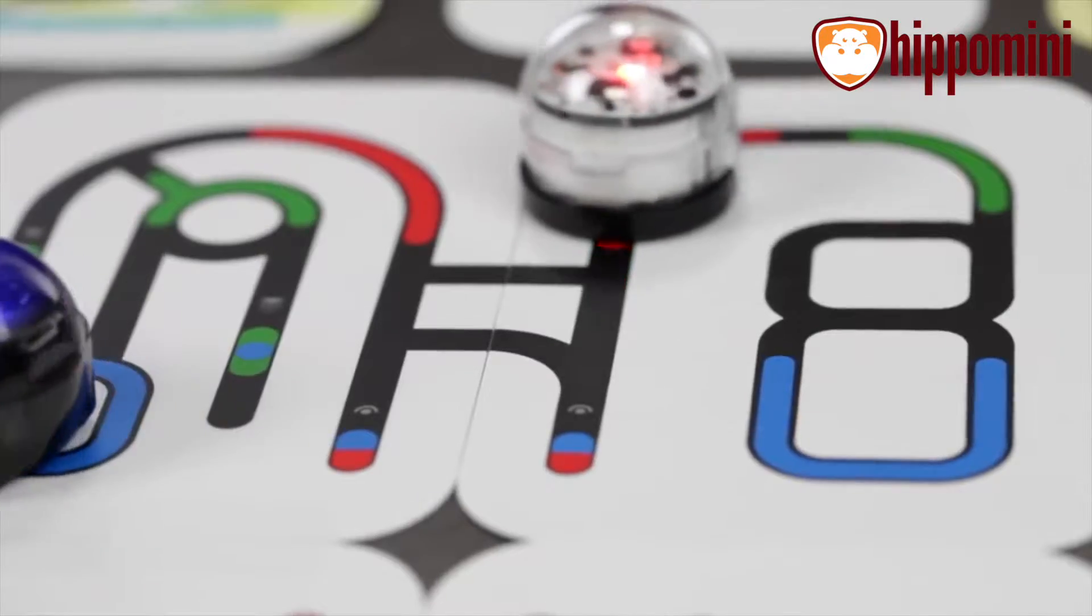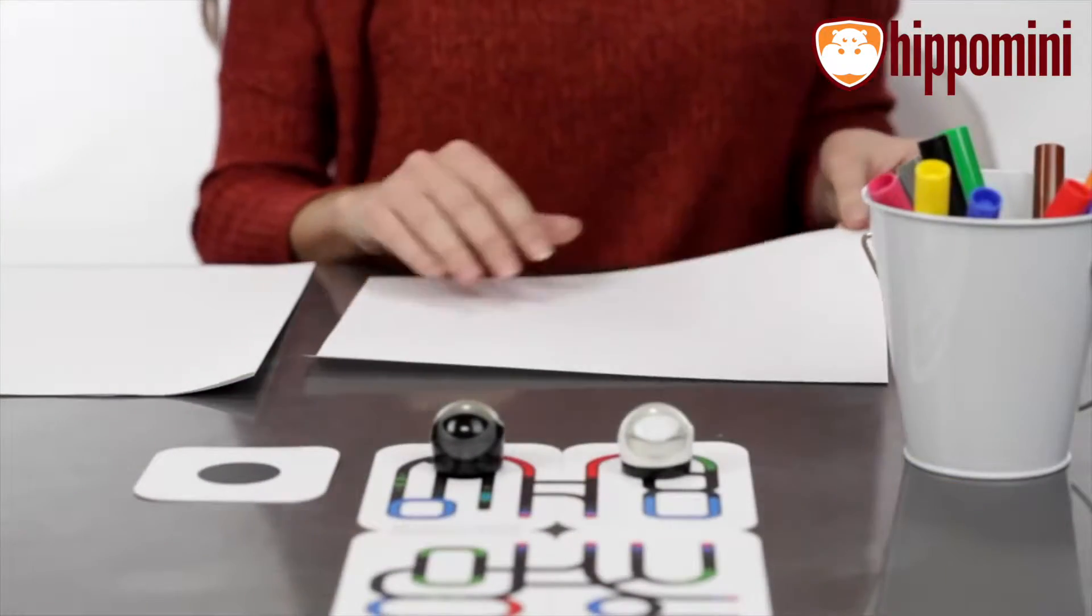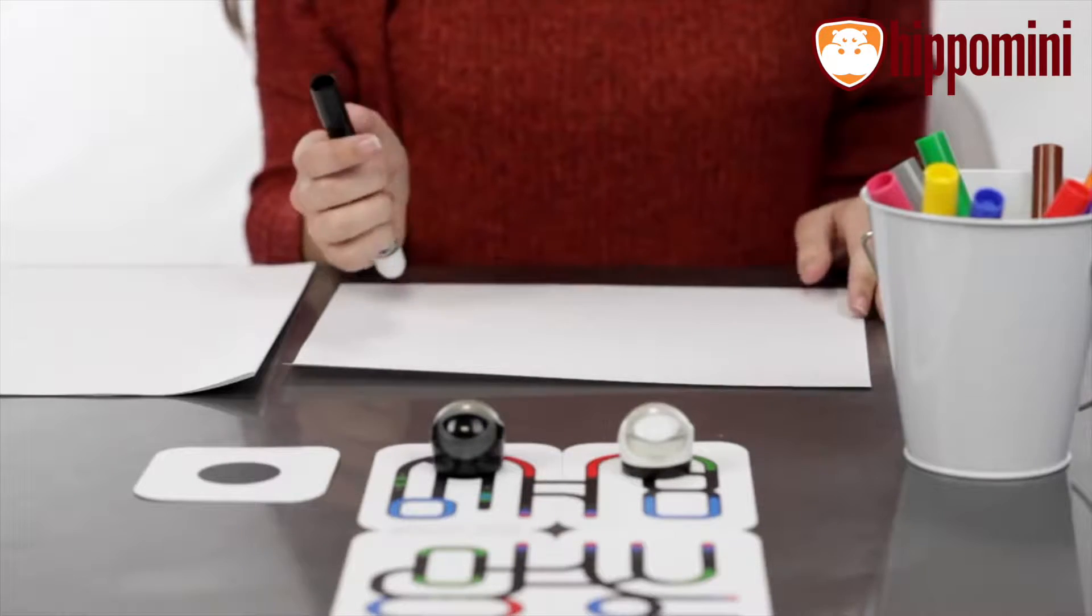Now I'm going to show you how to create your own playground. The first things you'll need are a white sheet of paper and some markers. We recommend that you use a thicker marker but if you don't have one that's okay.